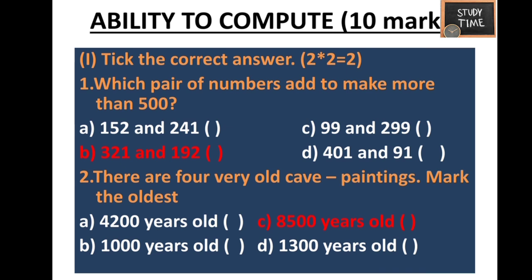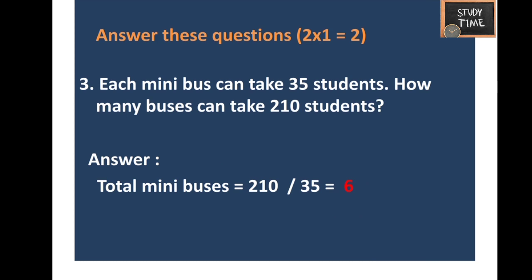Each minibus can take 35 students. How many buses can take 210 students? 210 divided by 35 equals 6 — six minibuses is the answer.